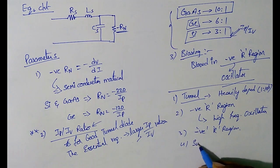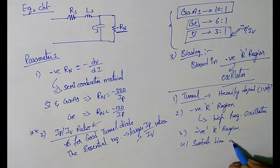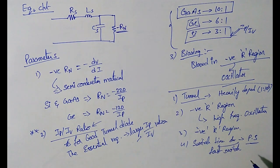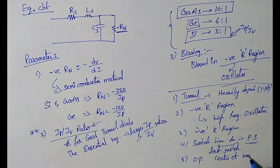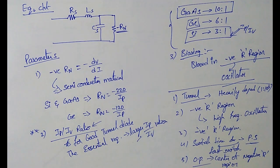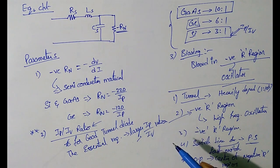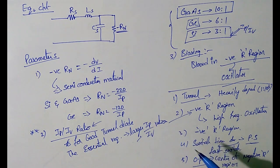To summarize the key points of tunnel diode: it is a heavily doped diode with a doping ratio of 1 to 10³. It produces a negative resistance region, due to which it acts as a high-frequency oscillator. The good tunnel diode depends on the IP/IV ratio, and it is always biased in the negative resistance region. The switching time of this tunnel diode is in picoseconds, meaning it acts as a fast switch compared to ordinary diodes. These are the very important points likely to appear in competitive exams.